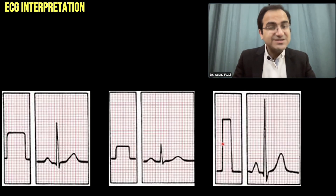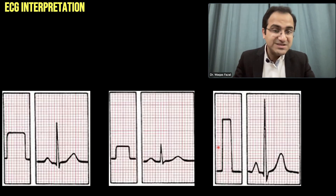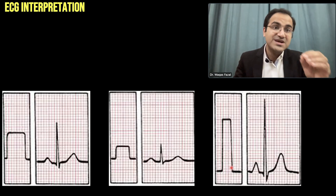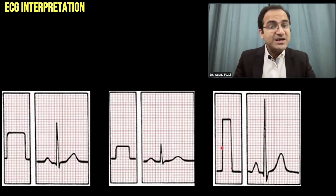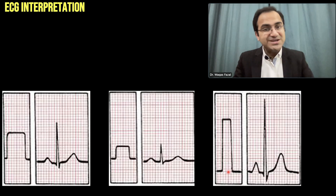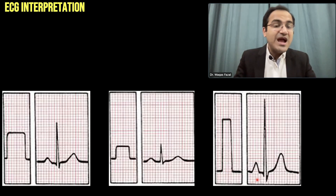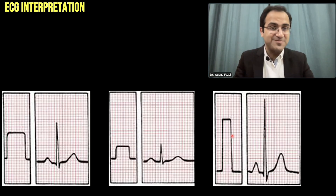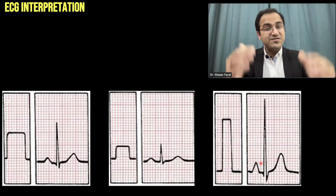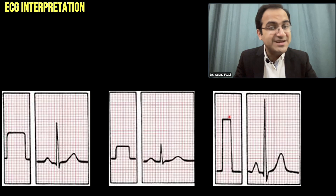Here is another example of non-standard calibration. In this one the height of the calibration box is four large boxes tall, and the width is half a large box — so the calibration is non-standard. When you increase the height, the amplitude doubles. Look at the QRS complex here — its size has doubled due to the increase in calibration height. Look at the P waves and QRS complexes: their heights have doubled up due to the increase in calibration height.